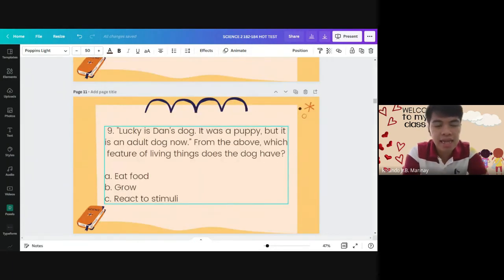Number nine. Lucky is Dan's dog. It was a puppy. But it is an adult dog now. From the above, which feature of living things does the dog have? A. Eat food. B. Grow. C. React to stimuli.